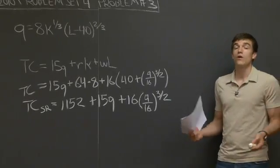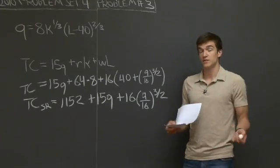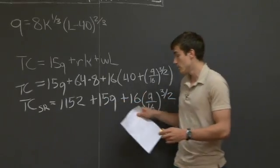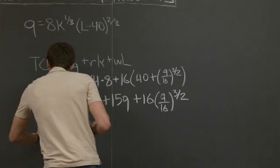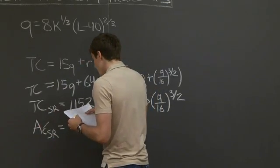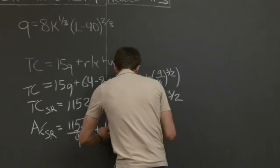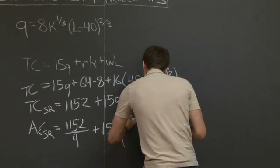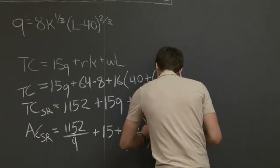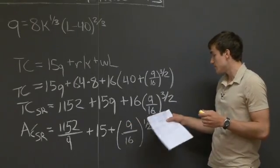To find the average cost, we divide the total cost by q — it represents per unit how much the producer spends on average to produce one unit. Dividing through by q, the short run average cost equals 1,152 divided by q, plus 15, plus quantity q over 16 raised to the 1-half.